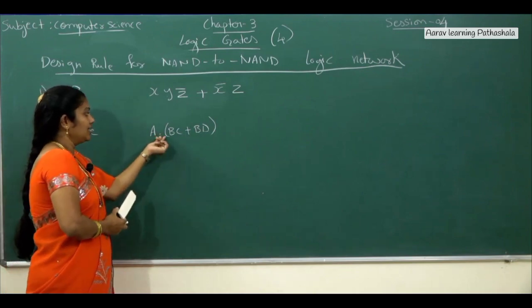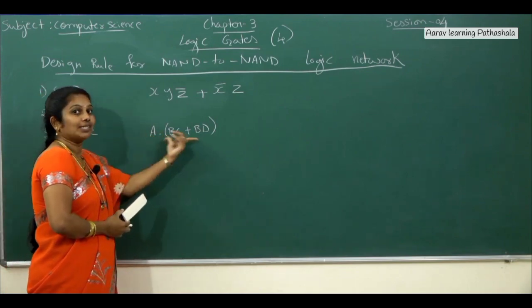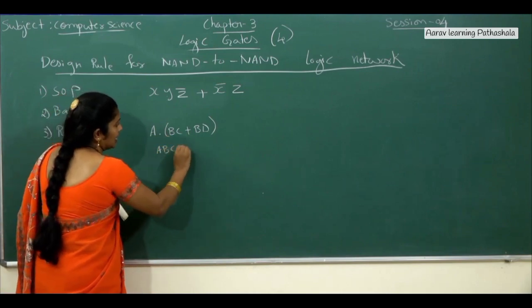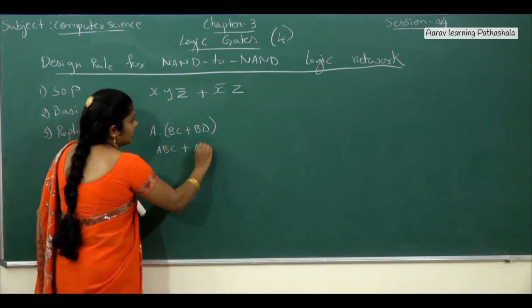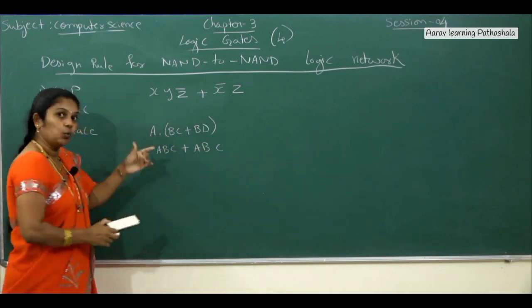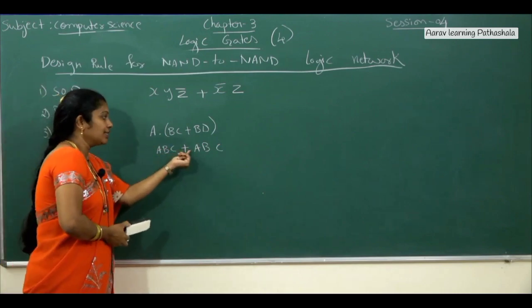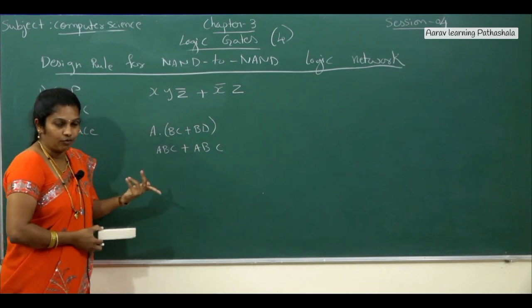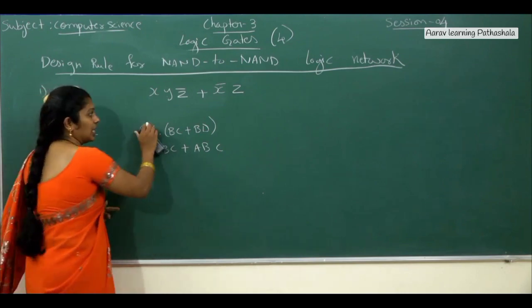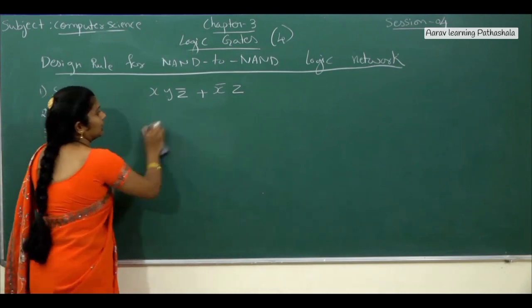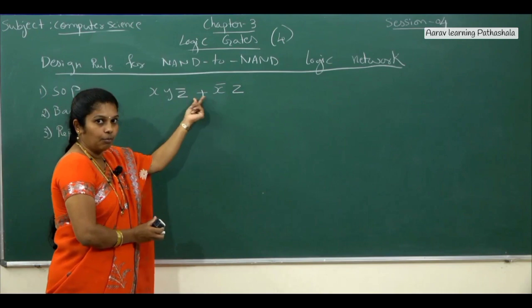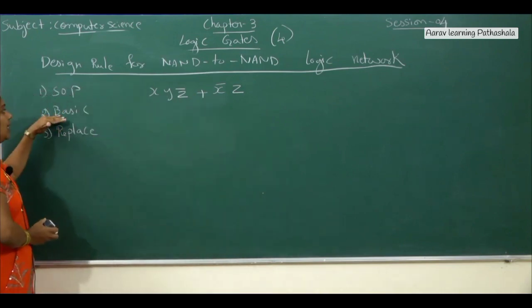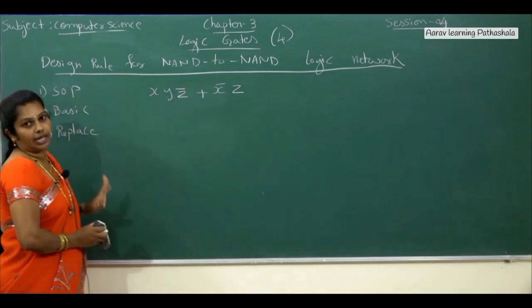For example, if you have A dot B dot C plus B dot D, that is already in sum of product format. But if the expression is in product of sum format, then you have to convert it — like expanding to get A B C plus A D D — convert it into sum of product format. Here since our expression is already in sum of product form, the first step is satisfied.